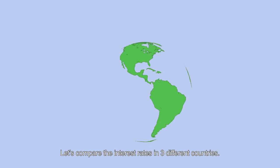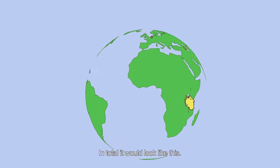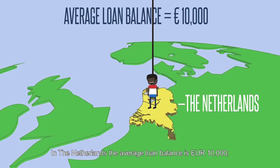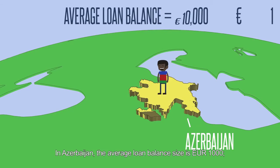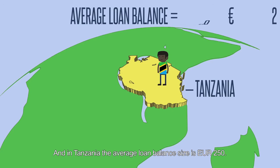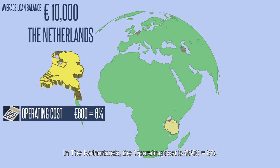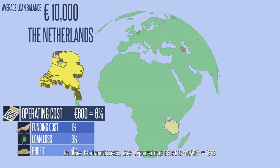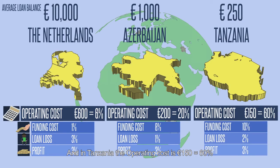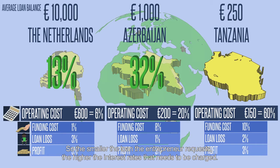Let's compare the interest rates in three different countries. In the Netherlands, the average loan balance is 10,000 euros. In Azerbaijan, the average loan balance is 1,000 euros. And in Tanzania, the average loan balance is 250 euros. In the Netherlands, the operating cost of 600 euros equals 6%. In Azerbaijan, the operating cost of 200 euros equals 20%. And in Tanzania, the operating cost of 150 euros equals 60%. So, the smaller the loan that the entrepreneur applies for, the higher the interest rate that needs to be charged.